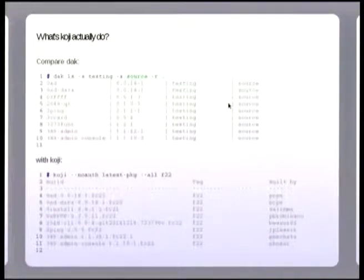When I say it's like DAK, I mean it really is kind of the same. So take a DAK command line, you can generally have a pretty similar Koji command line. The example there is just listing the source packages that are currently in testing, or the source RPMs that are currently in Fedora 22.